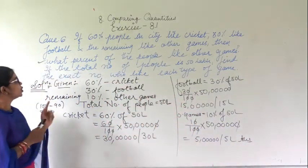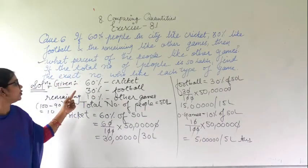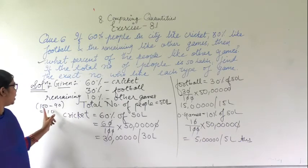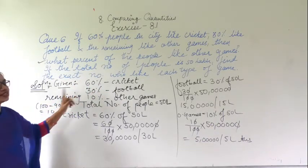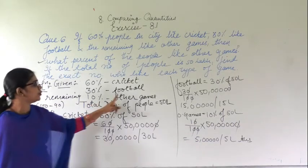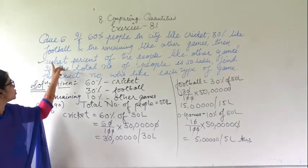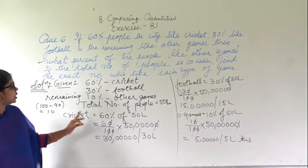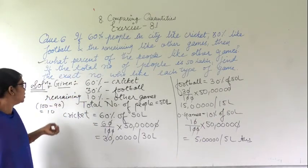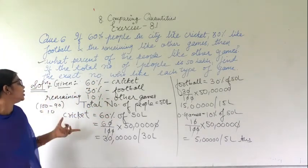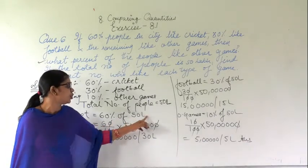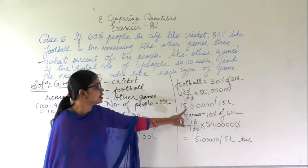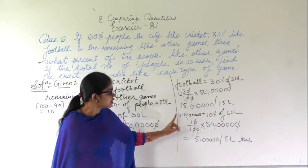So in this question, 60% like cricket, 30% like football, and for the remaining we took 100 minus 90 which is 10%. Given the total is 50 lakh, for cricket I took 60% of 50 lakh and got 30 lakh. For football it is 15 lakh. For other games it is 5 lakh.